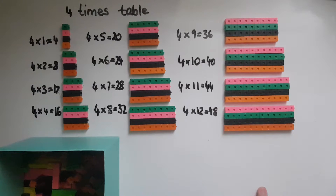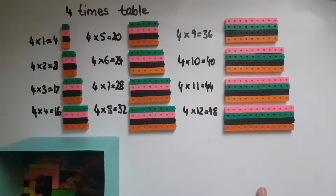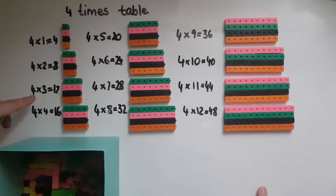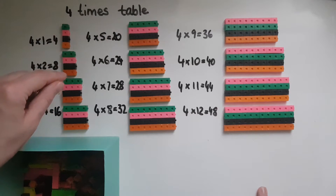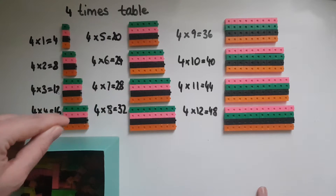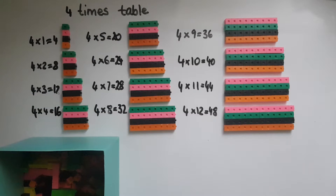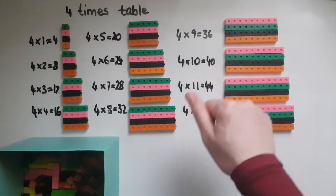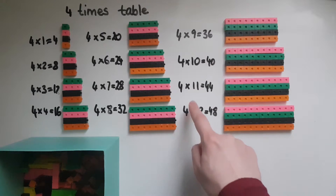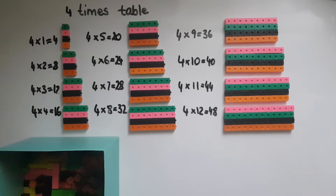As the name suggests, the four times table is about going four times to get the same number of things. If I put my hand in this box four times and get one cube each time, I'll end up with four cubes in total. Four times two is eight, four times three is twelve, four times four is sixteen, four times five is twenty, four times six is twenty-four, four times seven is twenty-eight, four times eight is thirty-two, four times nine is thirty-six, four times ten is forty, four times eleven is forty-four, four times twelve is forty-eight.